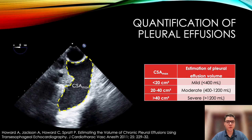We can use transesophageal lung ultrasound to quantify effusions. In the method described by Howard et al., effusions are examined in a short axis view at a multiplane angle of 0 degrees. The level in the esophagus where the effusion looks the biggest is located, and the maximal surface area of the effusion is then calculated by tracing the effusion. A maximal surface area of less than 20 cm² is generally a mild effusion of less than 400 mL. Between 20 and 40 cm² generally corresponds to a moderate effusion of 400 mL to 1.2 L, and more than 40 cm² is considered severe, corresponding to more than 1.2 L of fluid.